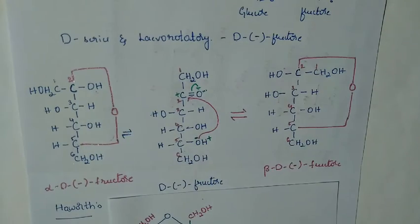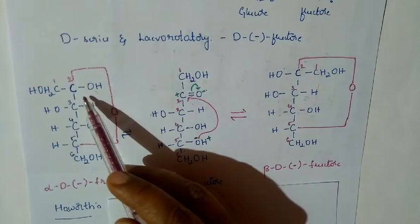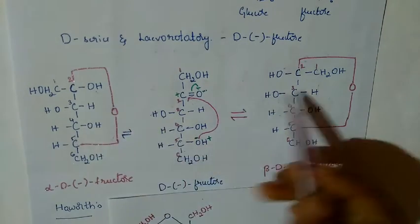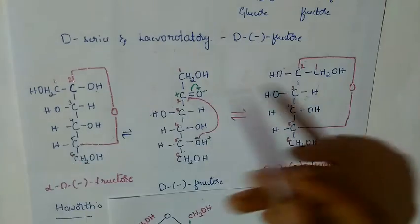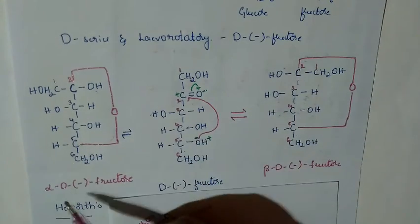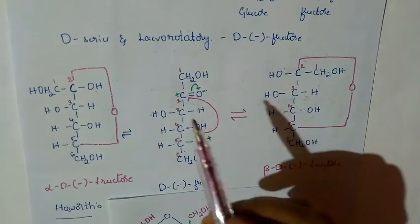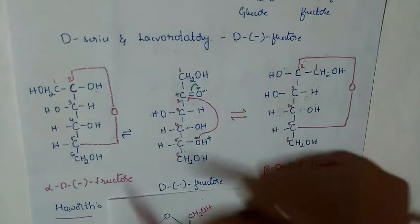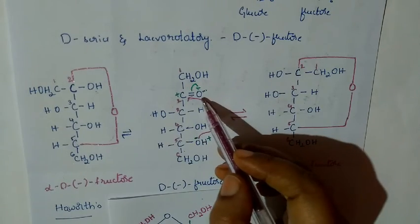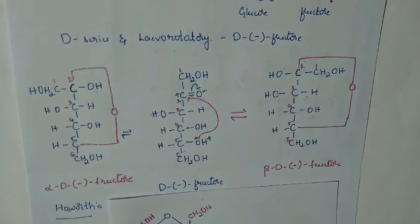In the open chain structure this was a non-chiral carbon, but in the cyclic structure it has been converted into a chiral carbon. Such carbons are called anomeric carbons, and the two forms — alpha and beta — are called anomers. This cyclization happens because the reaction takes place within the molecule between the carbonyl carbon and the OH group.